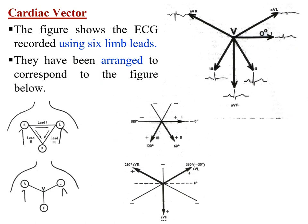What is the cardiac vector? The figure shows the ECG recorded using six limb leads — Lead 1, 2, and 3 — arranged to correspond to the figure shown. The right side of the slide shows the angles of each lead.